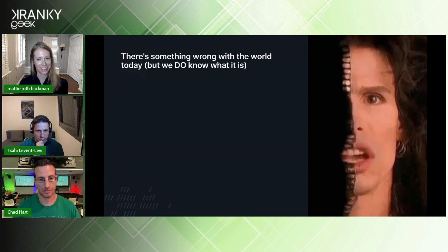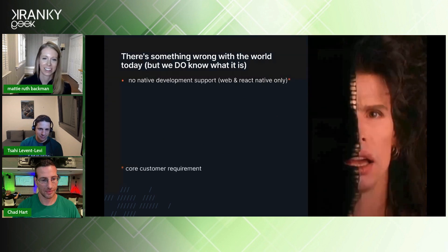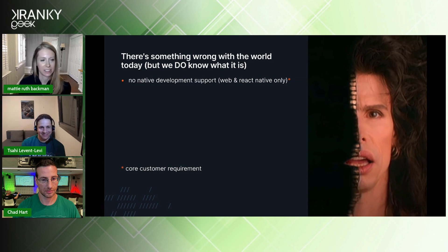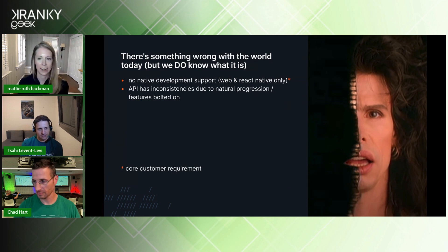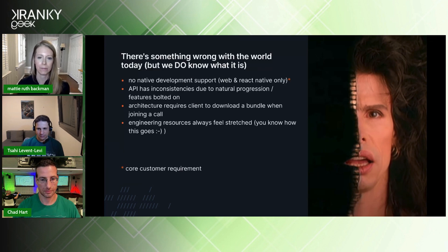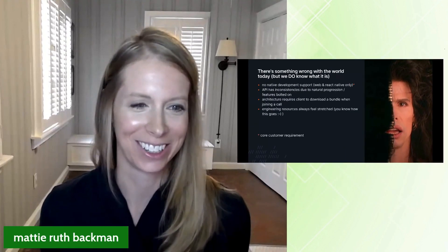But there's something wrong with the world today. Primarily, we do not have native development support — we only support Web and React Native. This is a core customer requirement that's asked of us daily, so we know we need to build it. Next, since the existing API has grown organically, like many APIs it has inconsistencies that naturally happen as you bolt on new features. Our existing architecture also requires the client to download a bundle when joining a call, which is something we want to improve on. And our engineering resources always feel stretched.